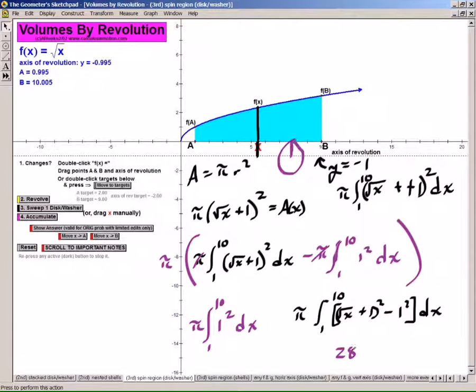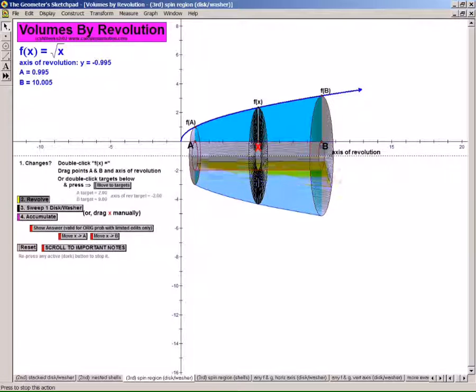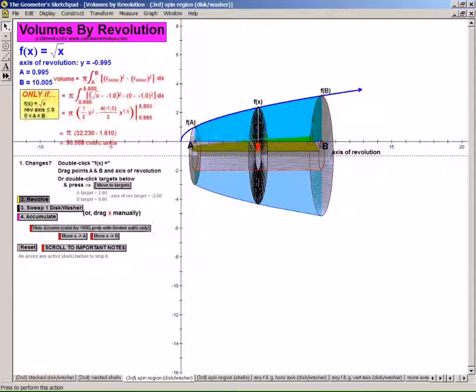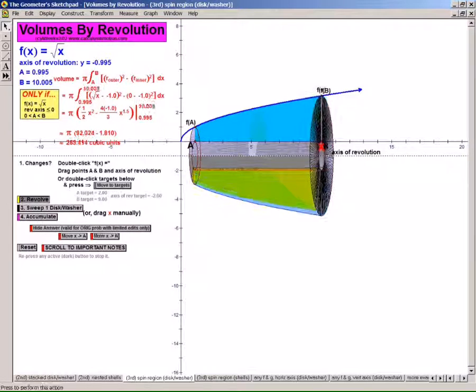Okay, I heard you guys got 283.79. Let's double check it. That's our volume of this thing. It's still rotating. Here we go. Let's show our answer and we'll sweep it all the way to the right. Okay. 283.414. Good job. The reason why mine is not exactly like yours is because this one is using an A that's .995, a B that's 10.005, and then an axis of revolution that isn't exactly negative one. Okay? Alright.